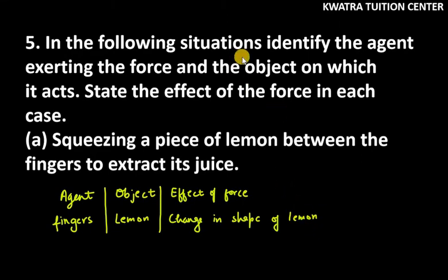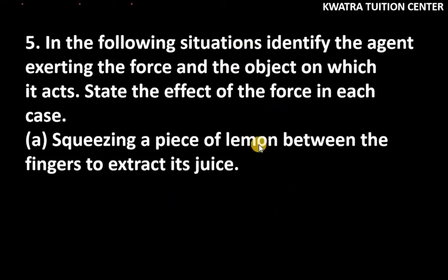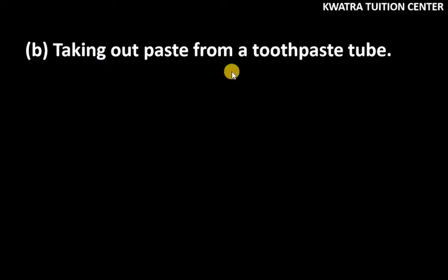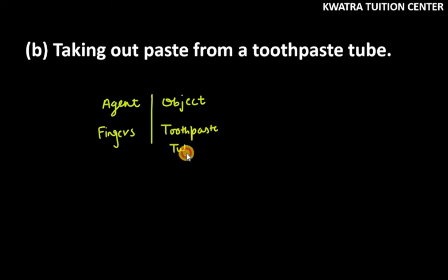That's the answer for the first part. Let's do the second part: Taking out paste from a toothpaste tube. Here again, who is the agent? Fingers. Second, the object is the toothpaste tube. Last, the effect is change in the shape of the toothpaste.